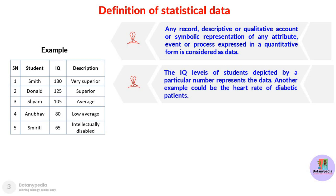Here is an example to explain what is statistical data. In a survey, you recorded the IQ levels of students, given a particular value after assessment. Five students were interviewed and their IQ levels were recorded. We have the names of the students in the second column and their respective IQ levels in the third column. The data is described in terms of numbers, so this is a quantitative way of recording data.